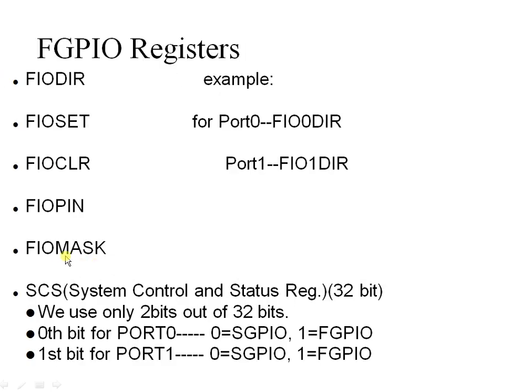The mask register is an intermediate register that connects the fast GPIO block with the pins. If a pin is set high in the mask register, it has no effect on the physical pins. When the mask register bit is zero, changes directly affect the corresponding pins. Fast and slow GPIOs are differentiated using the System Control Status Register.